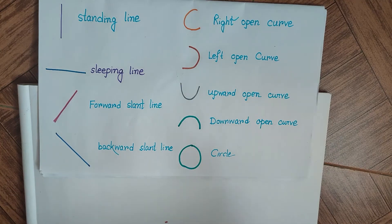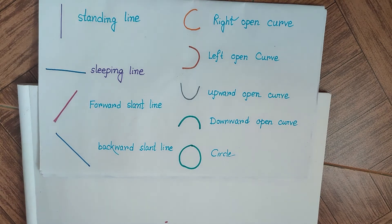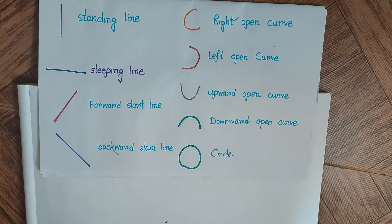Good evening friends. Welcome to Fab 5. Today, as you can see in front of our screen, we are going to use these shapes to teach children how to write numbers starting from 1 to 10 using these shapes. So let's start with 1, which is the first numeric number.